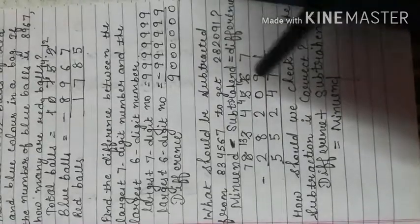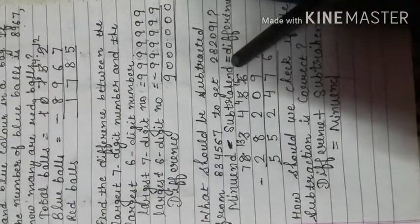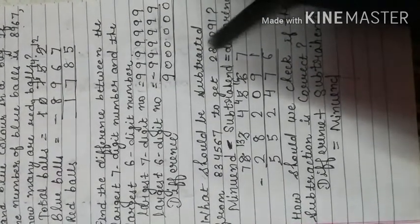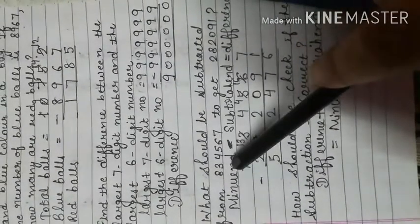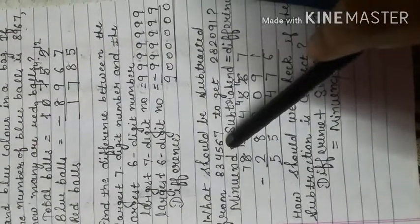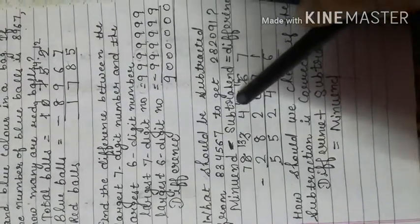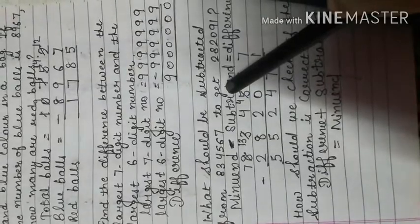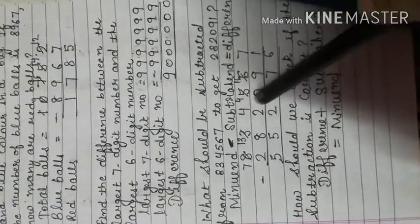Now question number 5: what should be subtracted from 8,34,567 to get 2,82,091? Here 2,82,091 is the difference and 8,34,567 is the minuend. You need to find the subtrahend — the number that was subtracted. To do this, subtract the difference from the minuend.